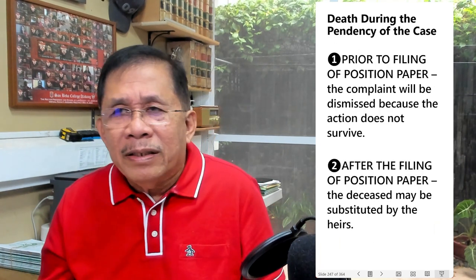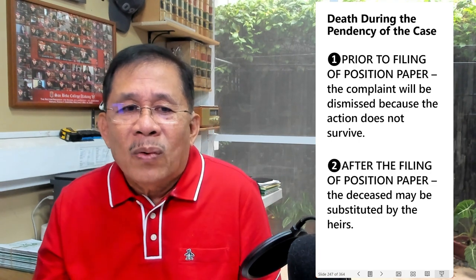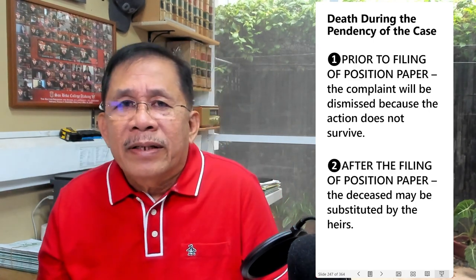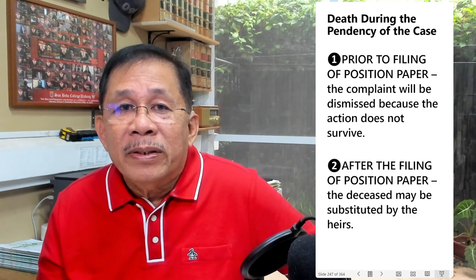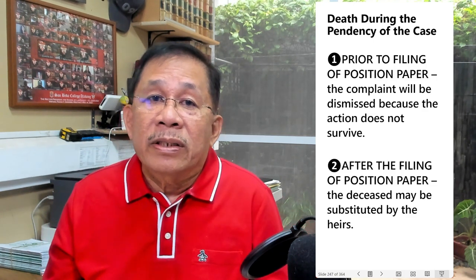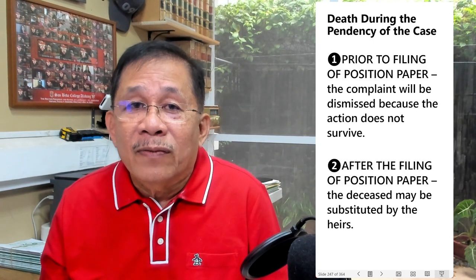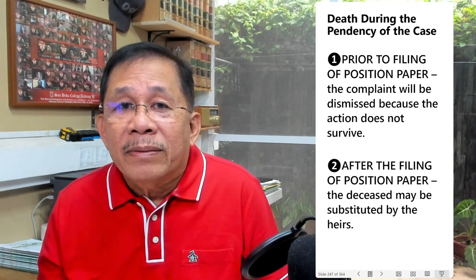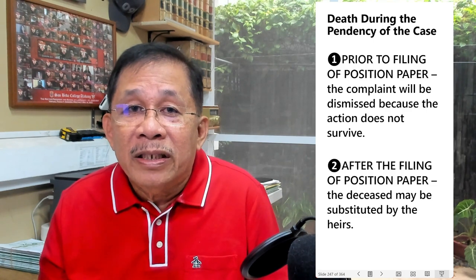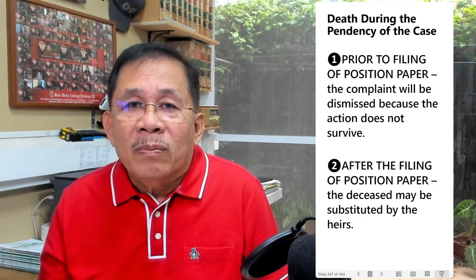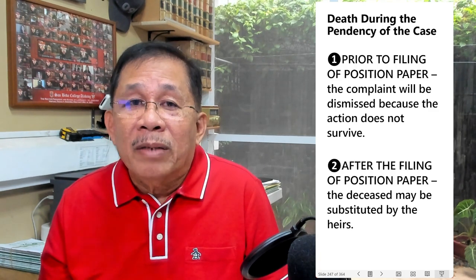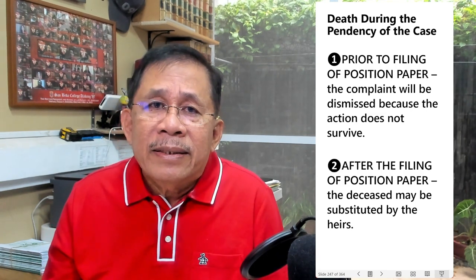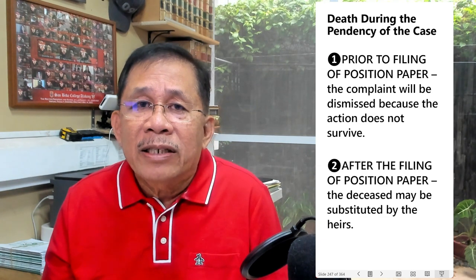Sometimes during the pendency of the case, the employee dies. What is the effect of death during the pendency of the illegal dismissal case? If the death occurred prior to the filing of the position paper, the complaint will be dismissed because the action does not survive — the cause of action does not involve property rights but injury to the complaining employee. The right to labor may be property under constitutional guarantees, but the injury complained of is to the person and not to property rights, which are merely incidental. On the other hand, if death occurred after the filing of the position paper, then the deceased may be substituted by the heirs.